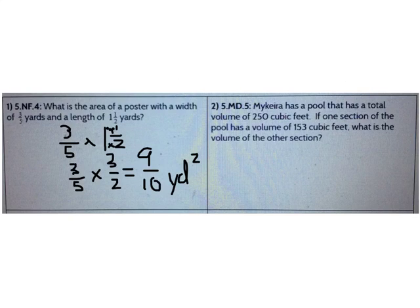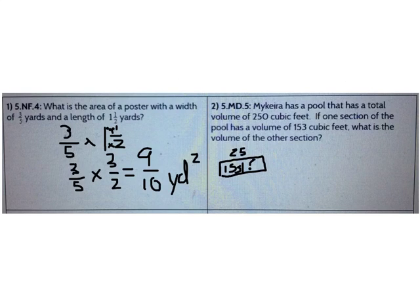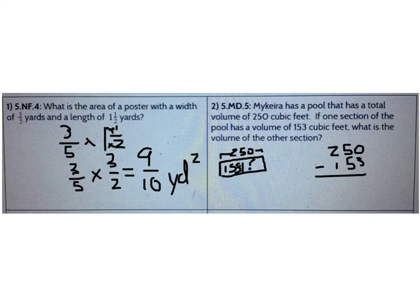Let's look at number 2. Mykira has a pool that has a total volume of 250 cubic feet. If one section of the pool has a volume of 153 cubic feet, what is the volume of the other section? I need to subtract. 250 minus 153 equals 97 cubic feet.